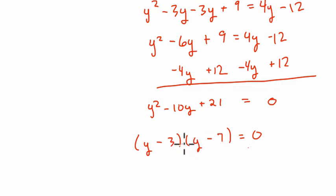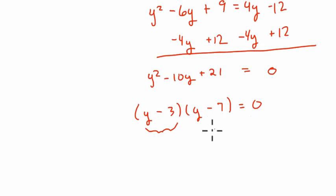And so the product of these two things needs to equal 0. That means either y minus 3 would have to equal 0, because 0 times anything is 0. So that's the first scenario. The second scenario is that y minus 7 would equal 0.